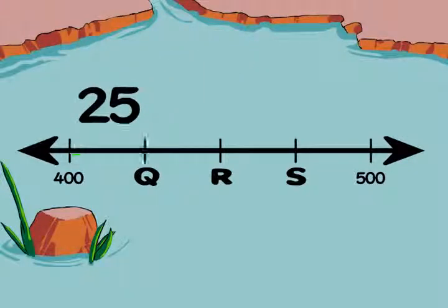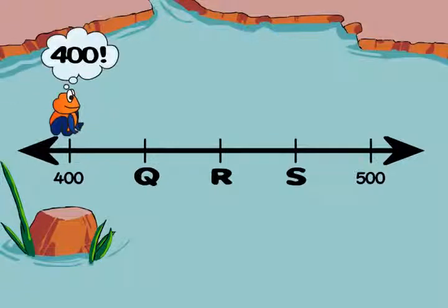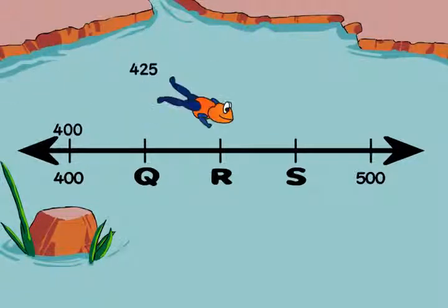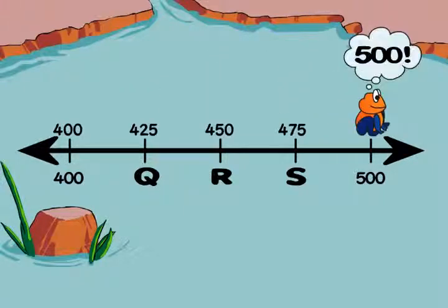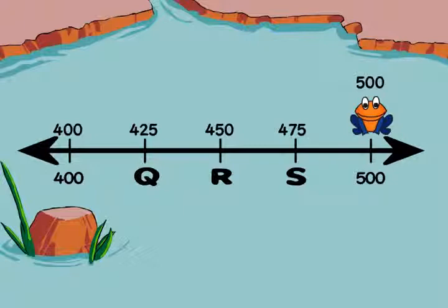Step three, now we can skip count by 25 from 400 to 500 to label the marks. 425, 450, 475. That lets us identify points Q, R, and S.